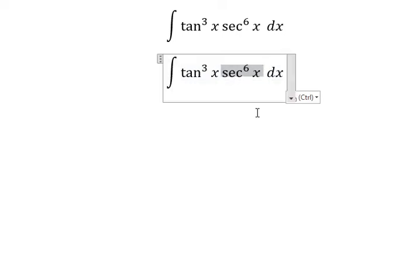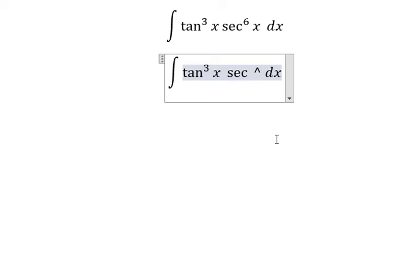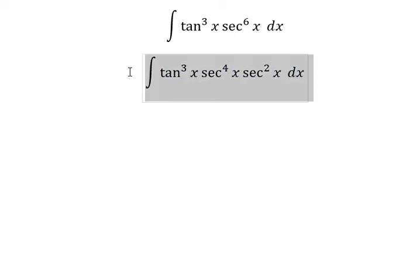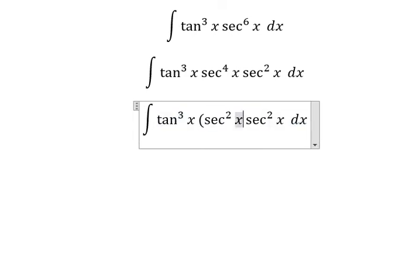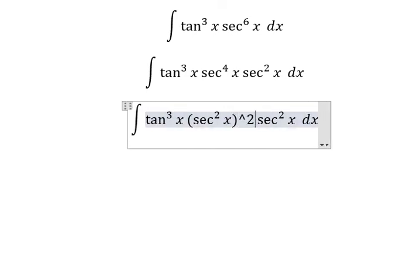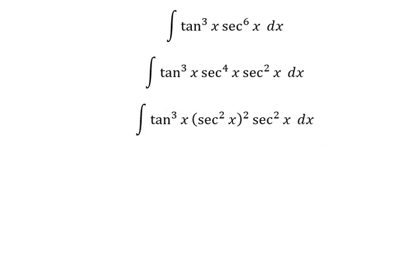This one we can rewrite as secant x to the power of 4 times secant squared x. So this one I can put secant squared x to the power of 2. And now we have the formula in here.